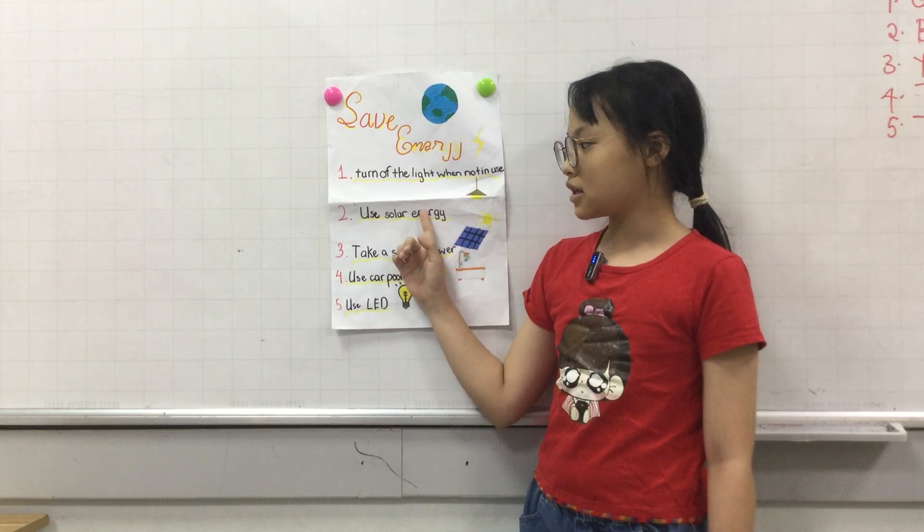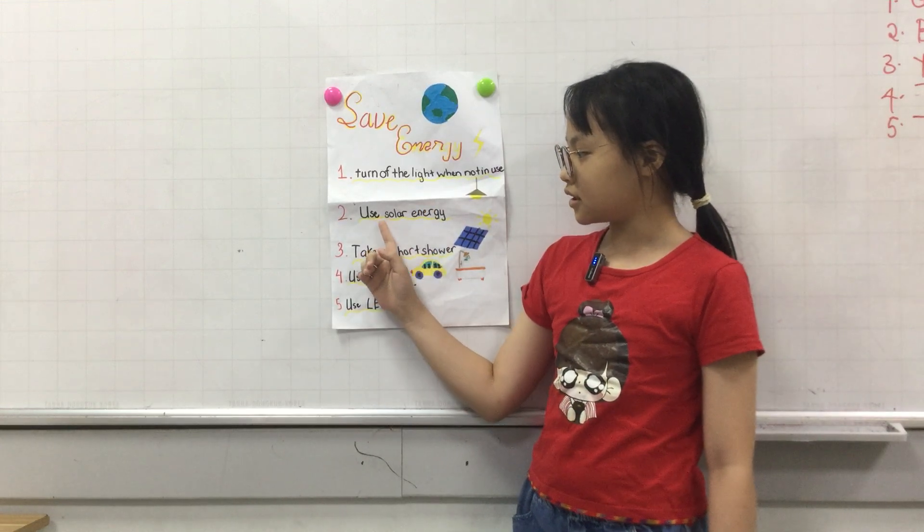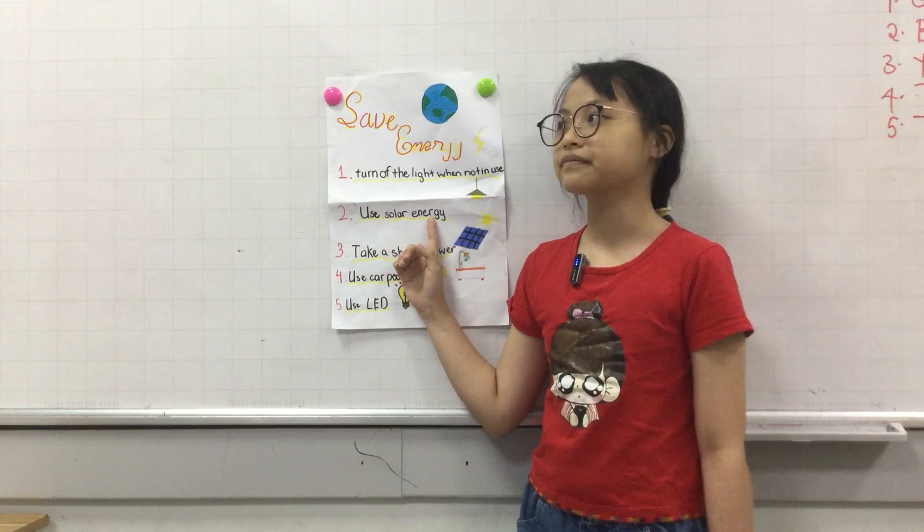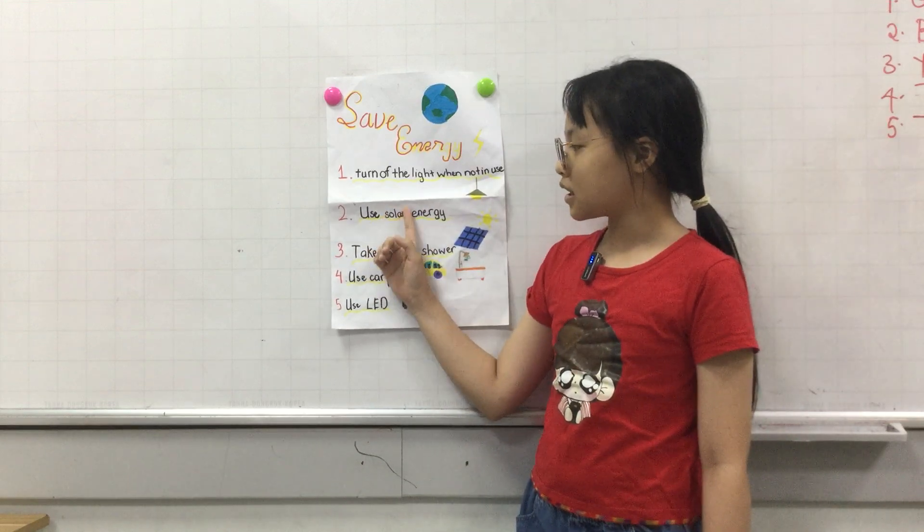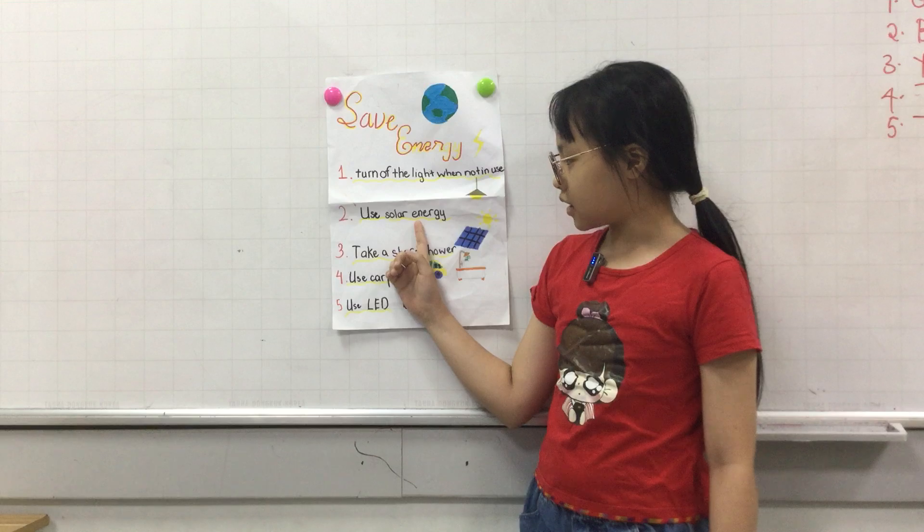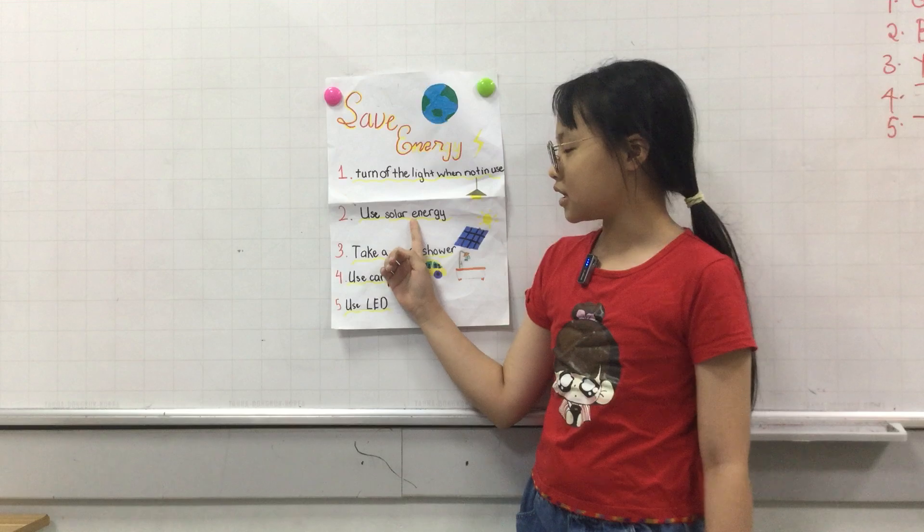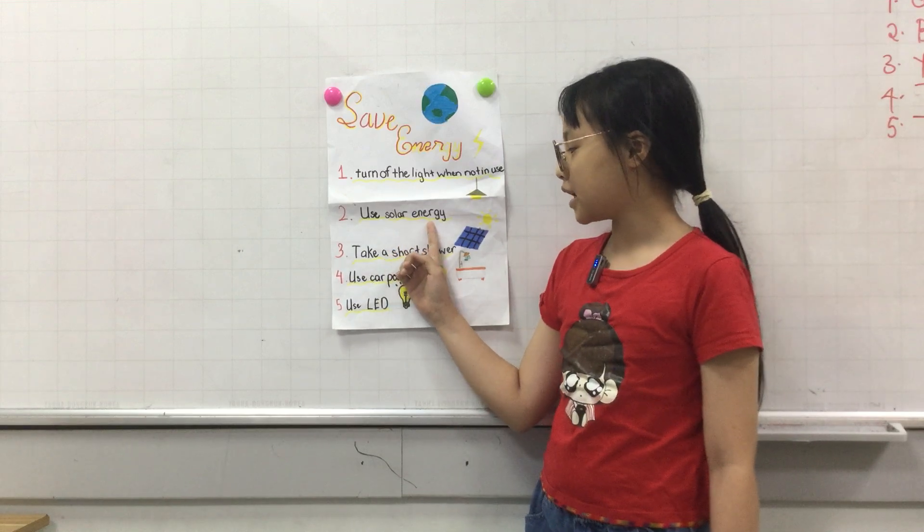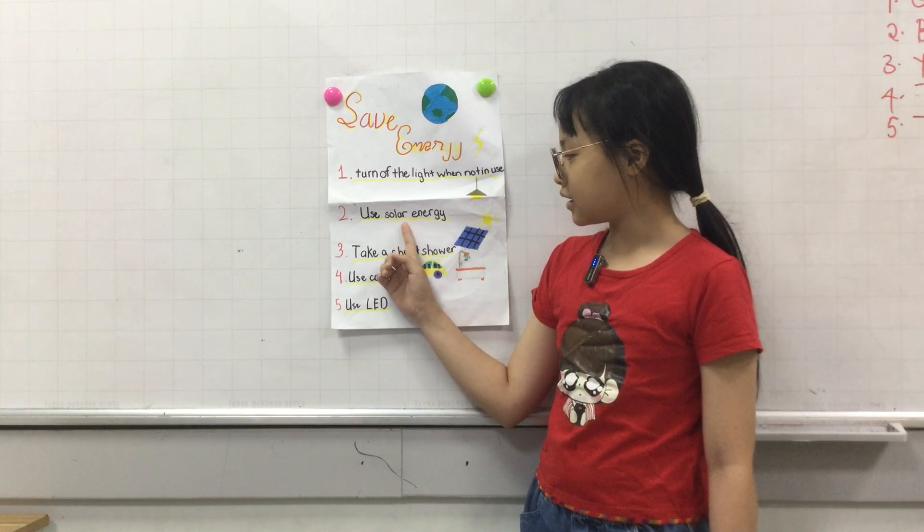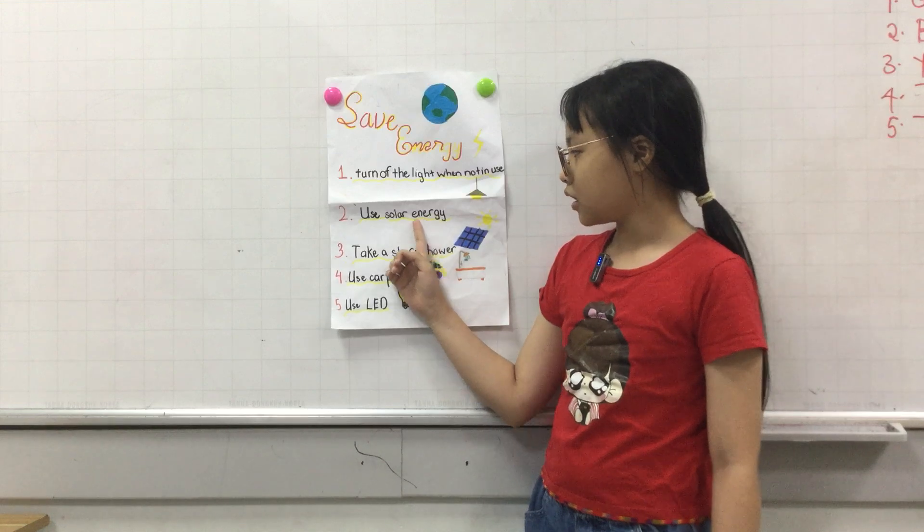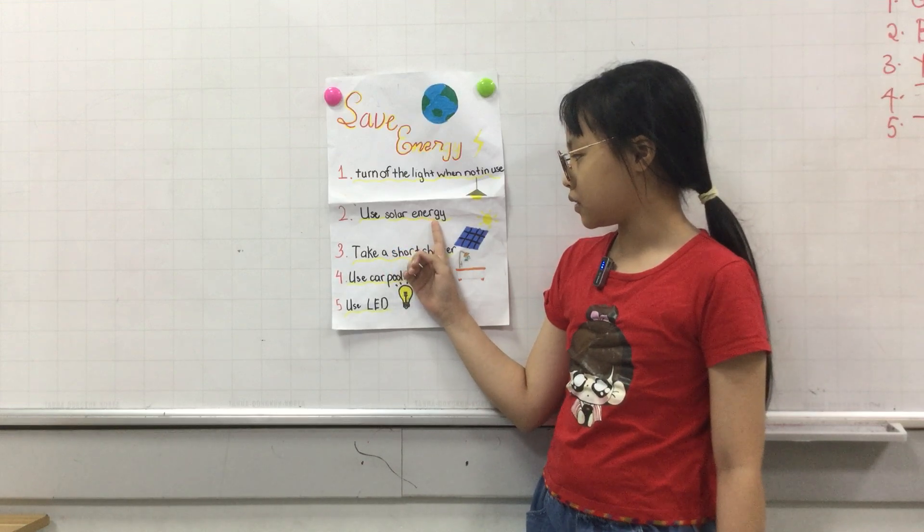The second way to save energy is to use solar energy. Fossil fuels make a lot of pollution. Solar energy is renewable energy and it doesn't make any pollution.